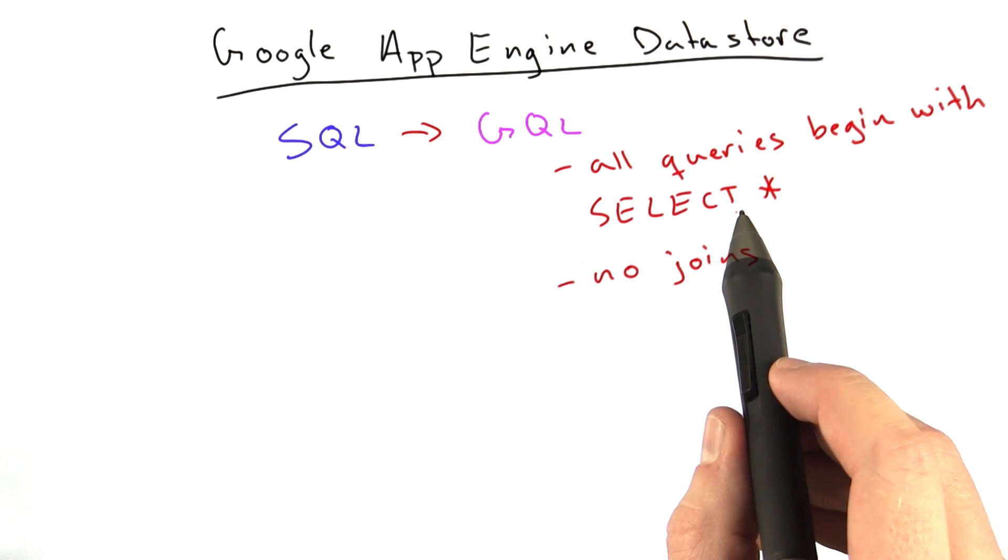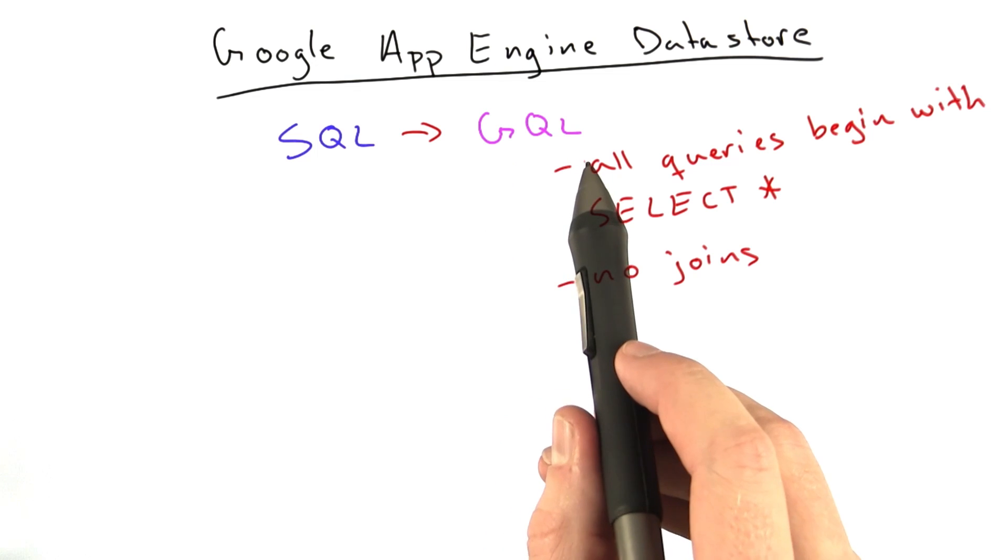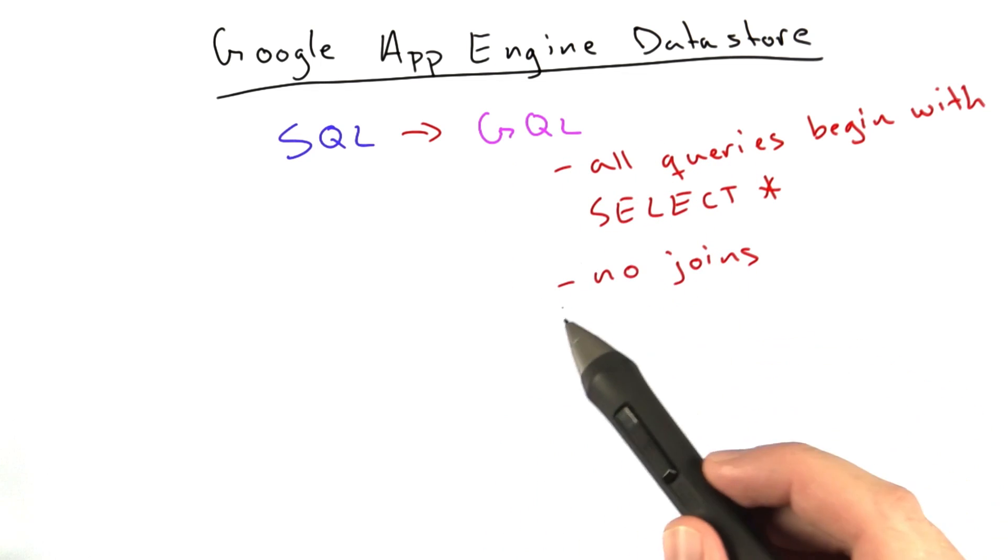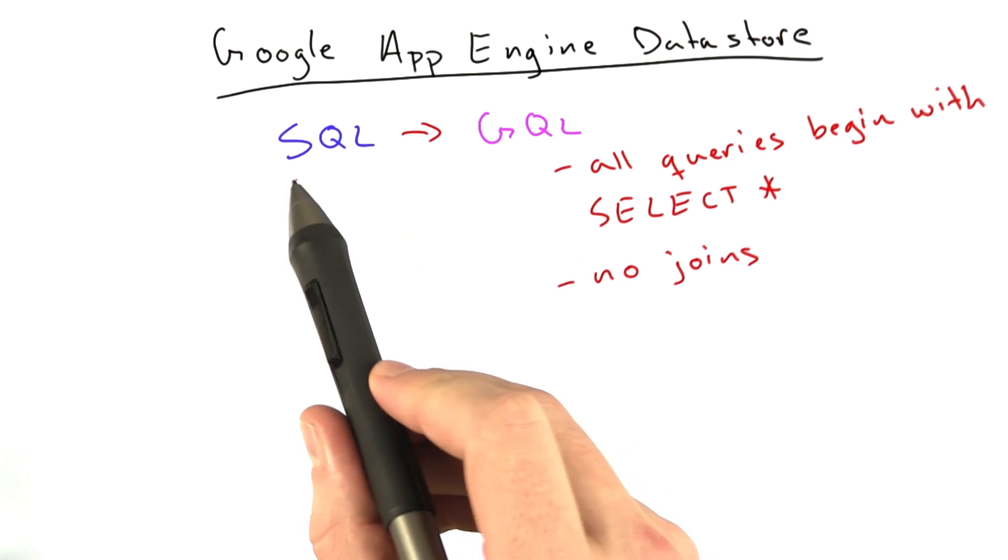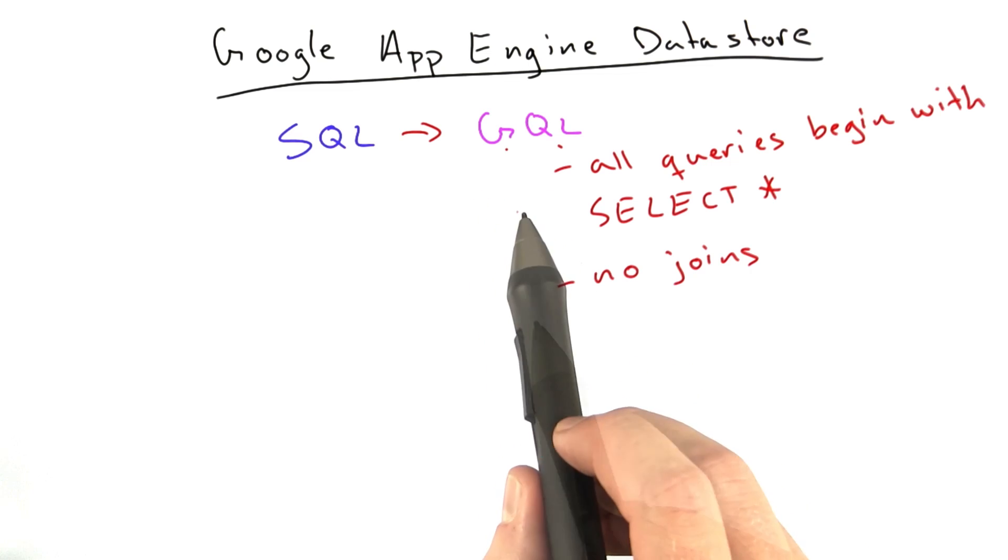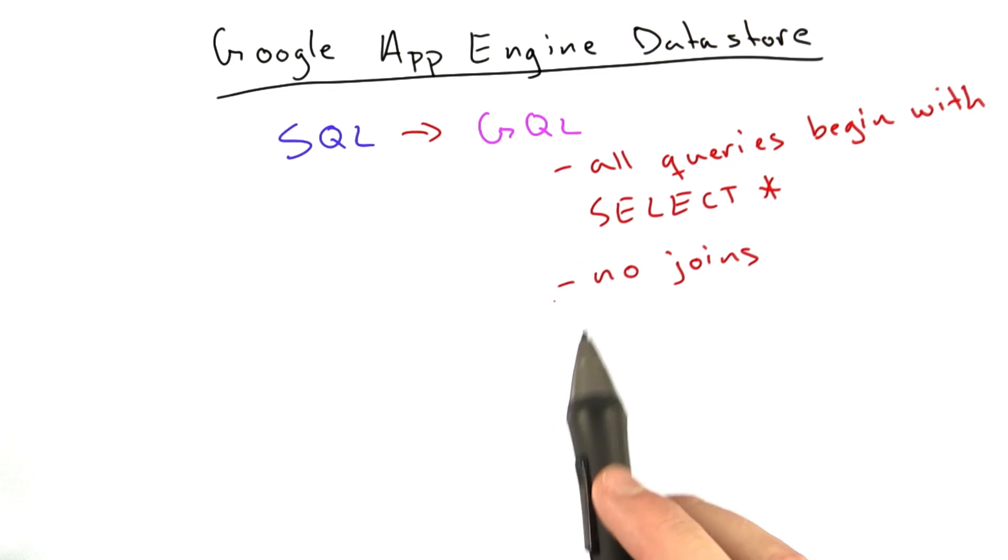When we're using GQL, actually we don't even have to use GQL at all. The data store has a kind of procedural language you could use as well. But since we've spent all this time practicing SQL, and you'll probably use it elsewhere in your career, we're going to use GQL for this example so we can at least have some consistency there.